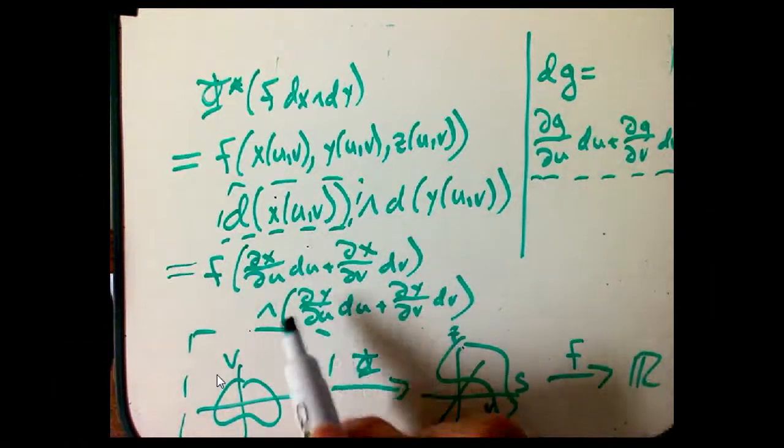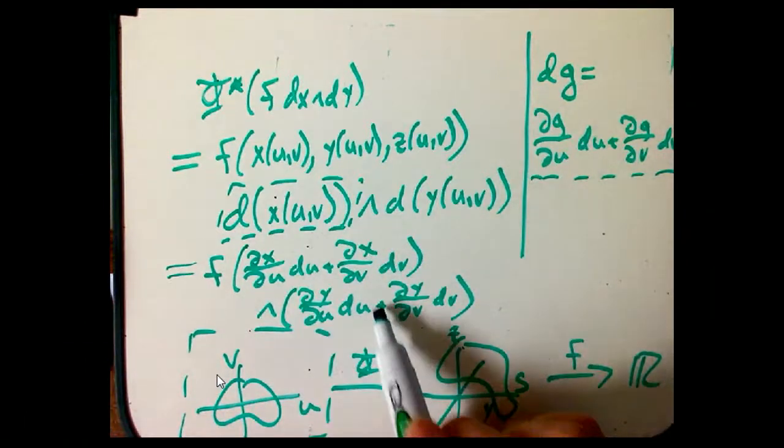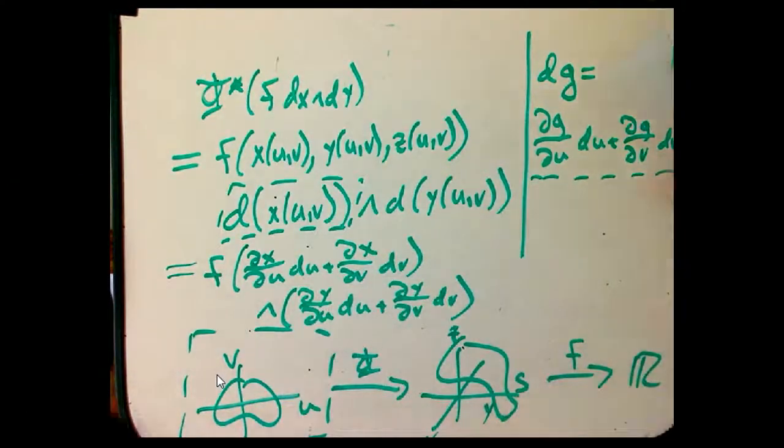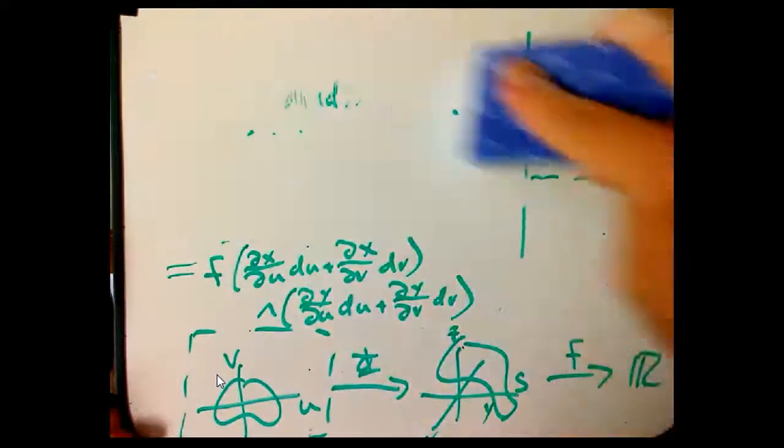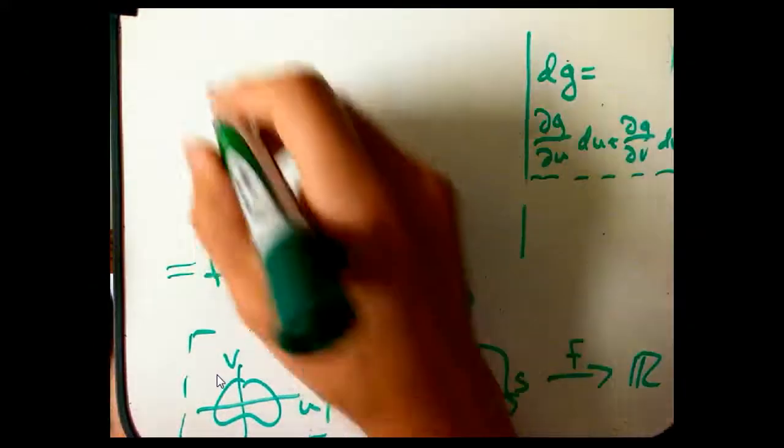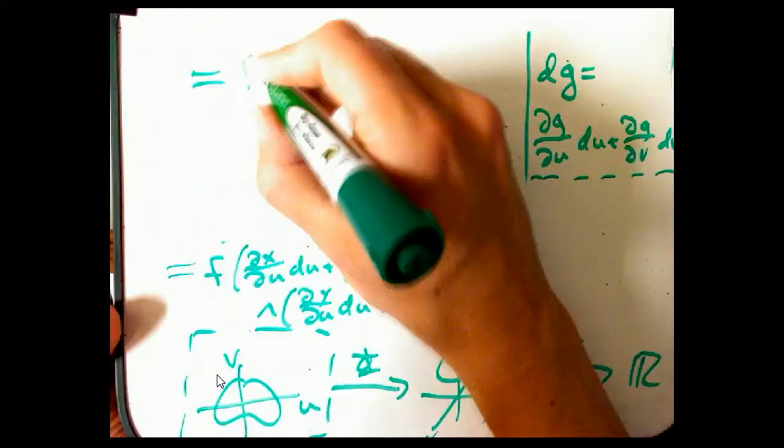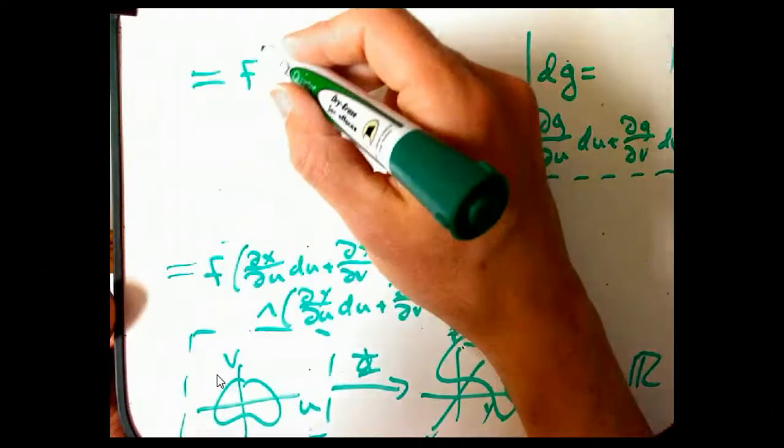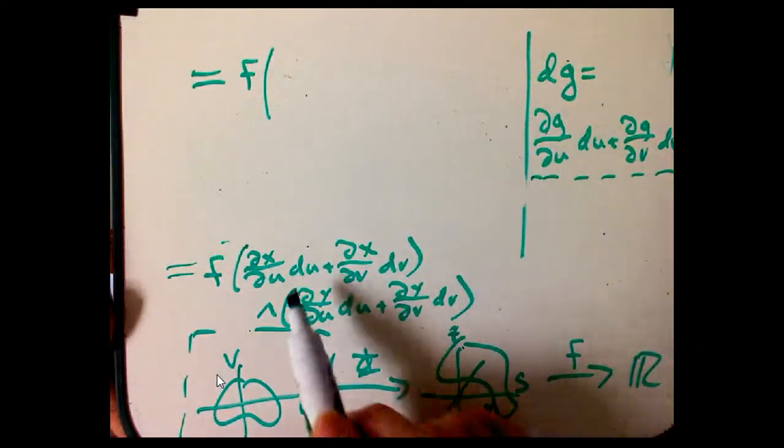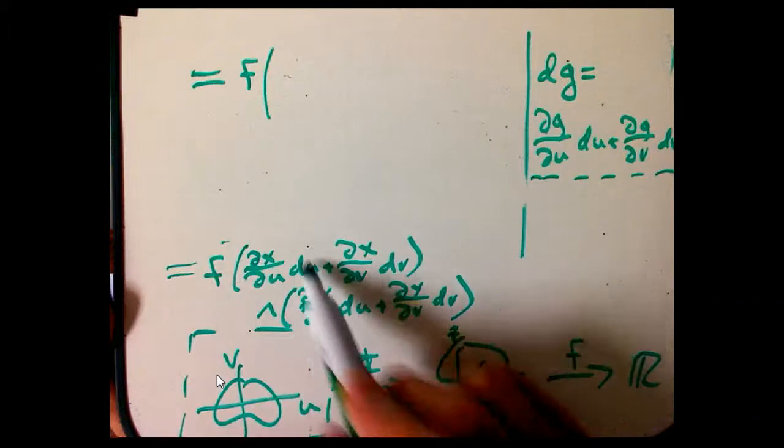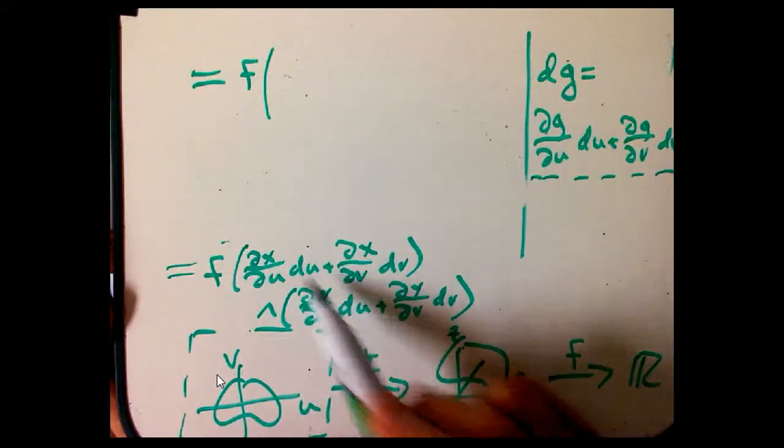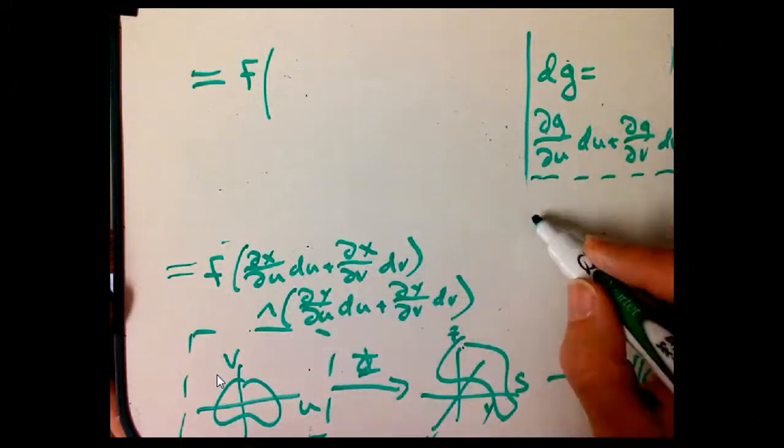And now I can use algebra. I can foil that out. The linearity and the distributivity lets me foil that out. So I'm going to have to stick it up here. That's going to be f times, what are we going to get? We're going to get a du wedge du. Let's think about that. Du wedge du. What should that look like?